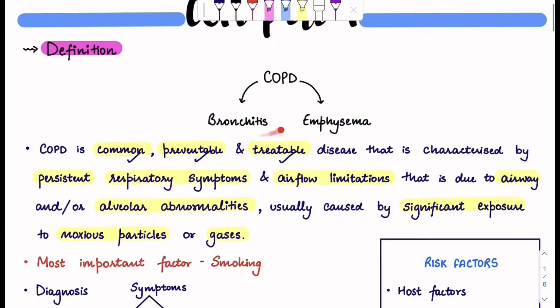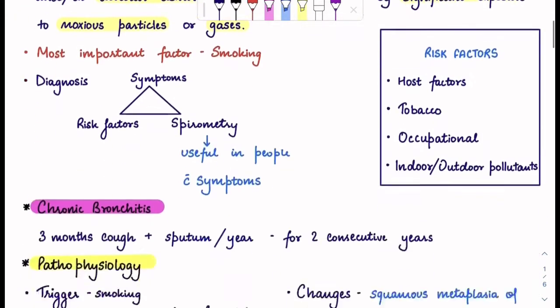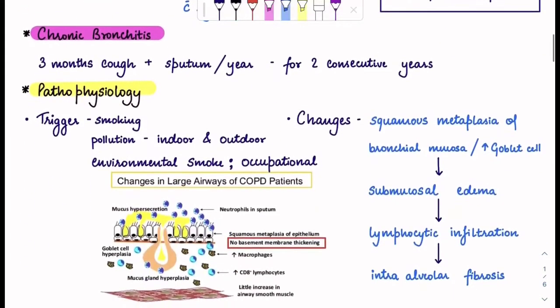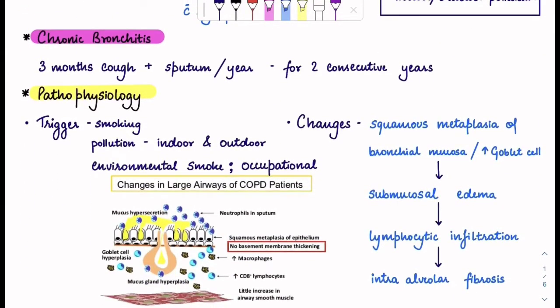Let's start with the first component, that is bronchitis — chronic bronchitis. How do you define if a person has chronic bronchitis? There will be a history of three months of cough plus sputum per year for two consecutive years. This is a very important point — it will be for two consecutive years.